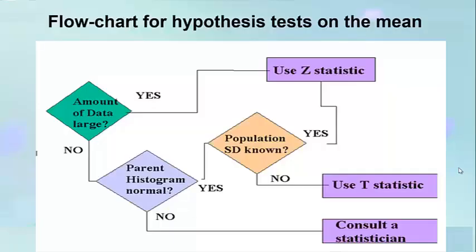of n. Flowchart for hypothesis test on the mean: if the sample size n is large, we use the z-statistic with known standard deviation. If n is not large and the parent distribution is not normal, we consult a statistician. If the parent distribution is normal and the population standard deviation is known, we use the z-statistic; if not known, we use the t-statistic.